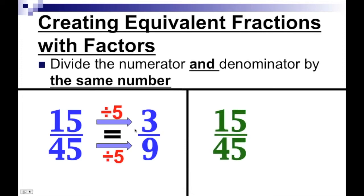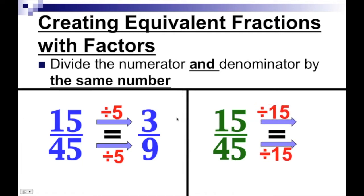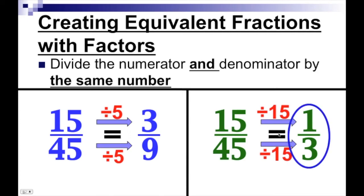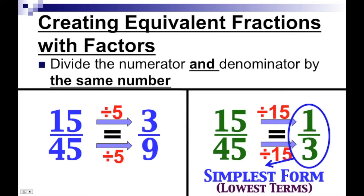Let's use the same numbers — fifteen over forty-five — but this time divide both the numerator and the denominator by fifteen. Fifteen divided by fifteen is one, forty-five divided by fifteen is three, so that's one over three. Our answer here, one over three, is actually called being in simplest form, or lowest terms — meaning we can't reduce our answer anymore.